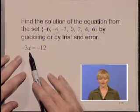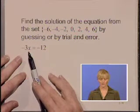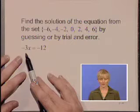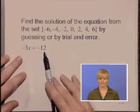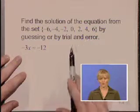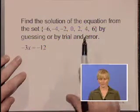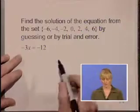Substituting 0 into the x position will result in 0 multiplied by -3, producing 0, not the result of -12. So we're going to go through our choices of the positive answers from our set and find the correct one.